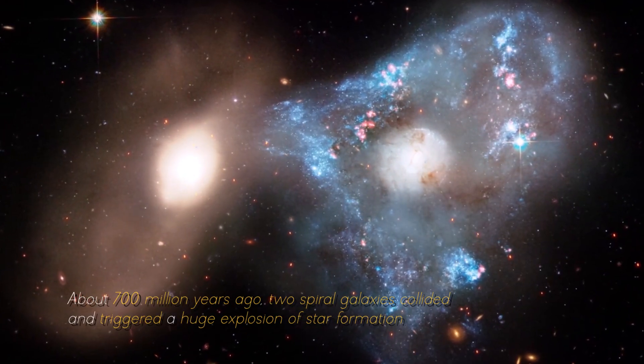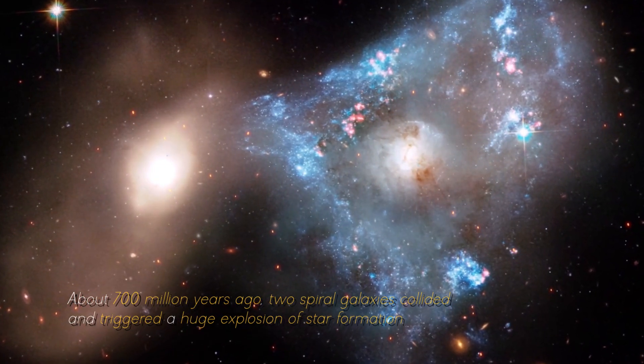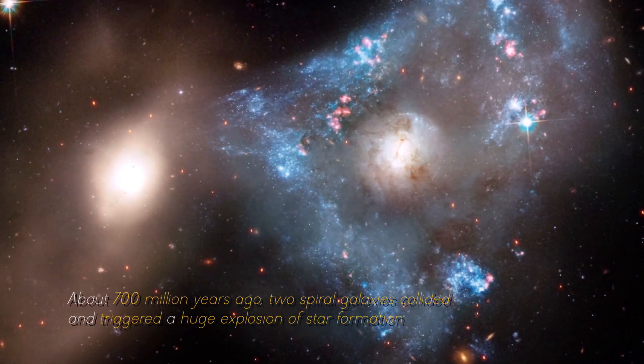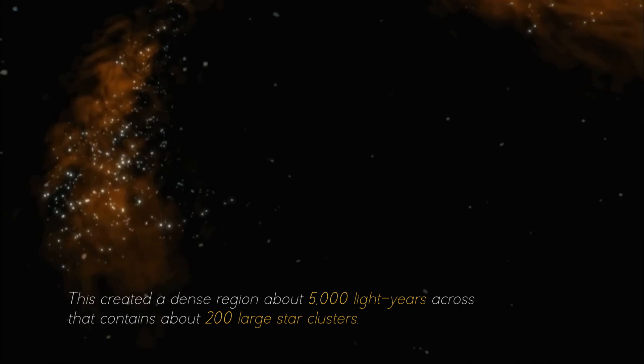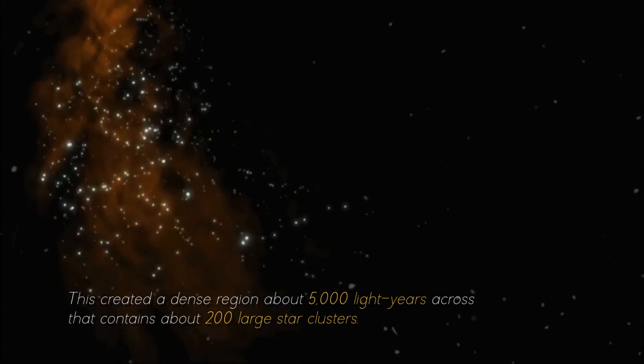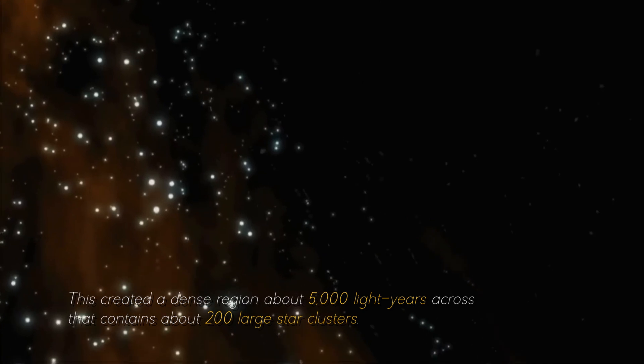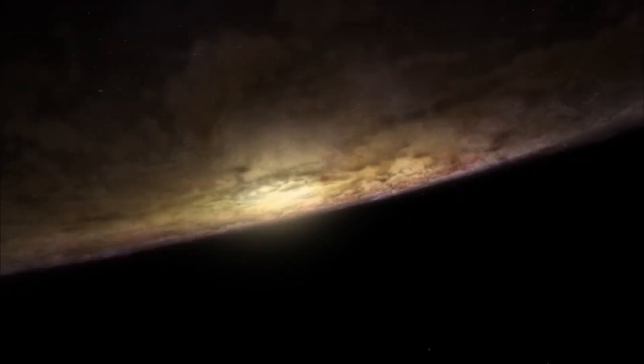About 700 million years ago, two spiral galaxies collided and triggered a huge explosion of star formation. This created a dense region about 5,000 light years across that contains about 200 large star clusters. Surprisingly, this small area contains as much gas as the entire Milky Way.